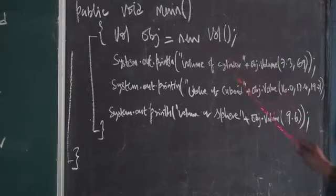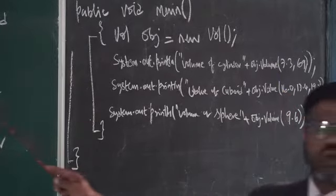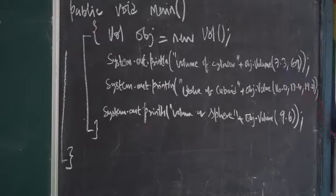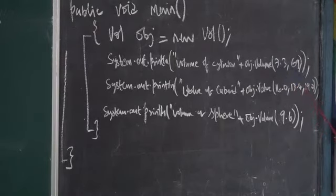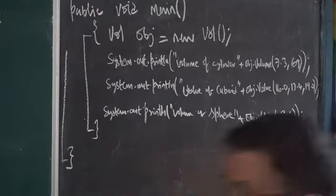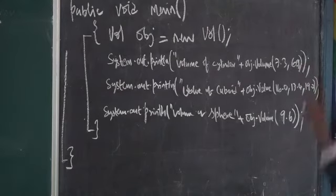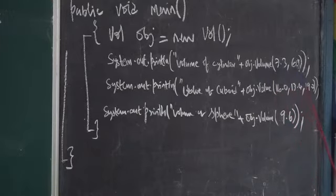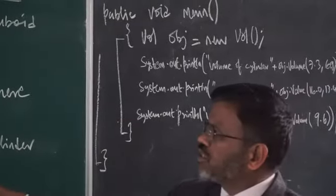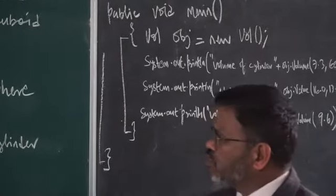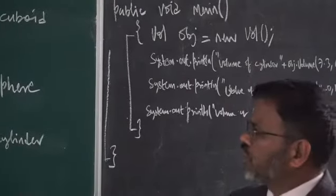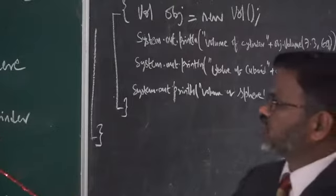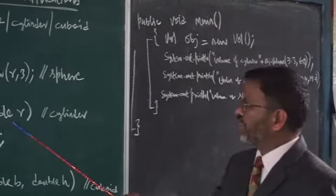Please note, from main method with the help of this object, I transfer the control from main method to a method called as volume. There are two parameters: the first parameter is 7.3 and second parameter is 6.9. From main method it looks for a method called as volume with two double parameters. So 7.3 will be stored in h, short form of height of your cylinder.